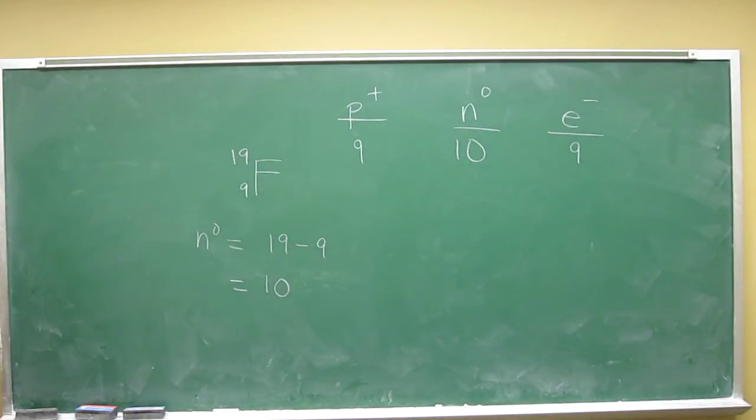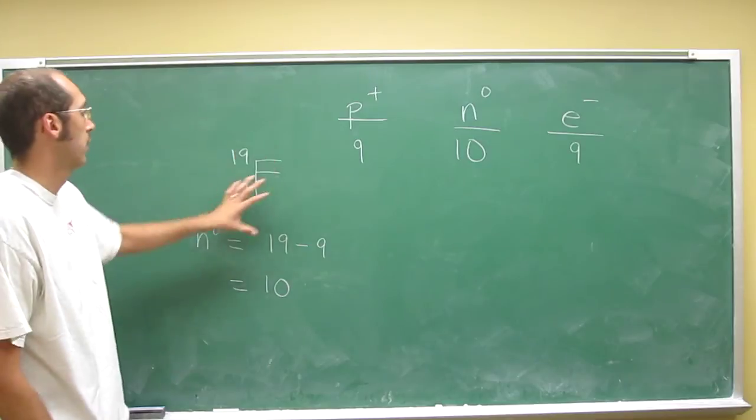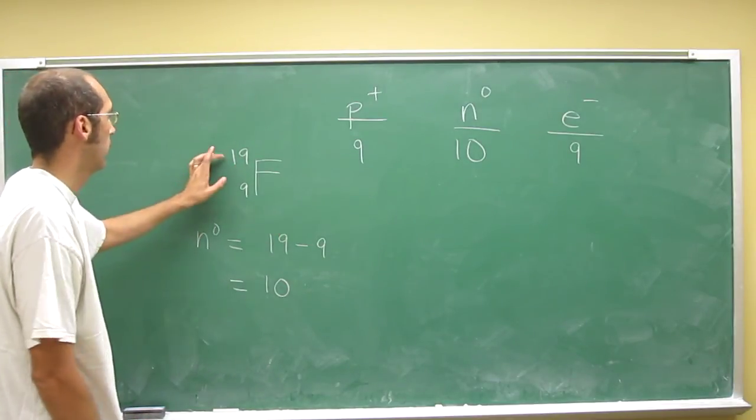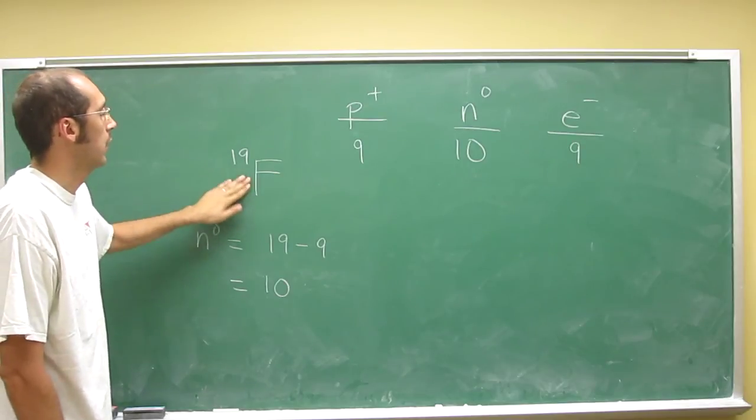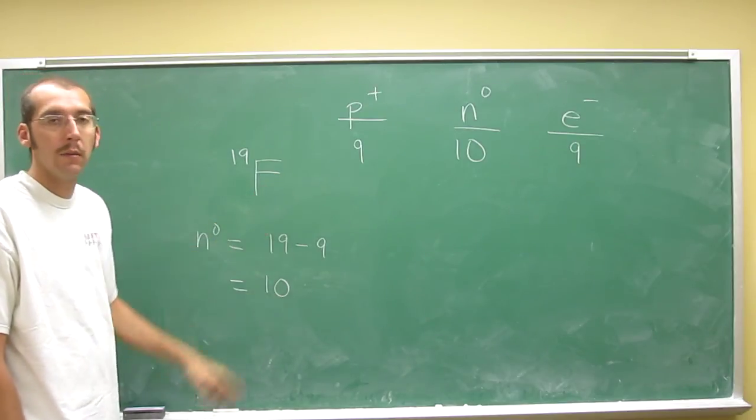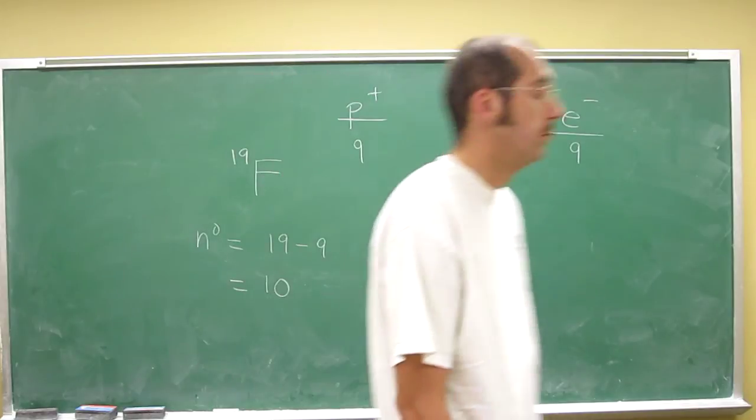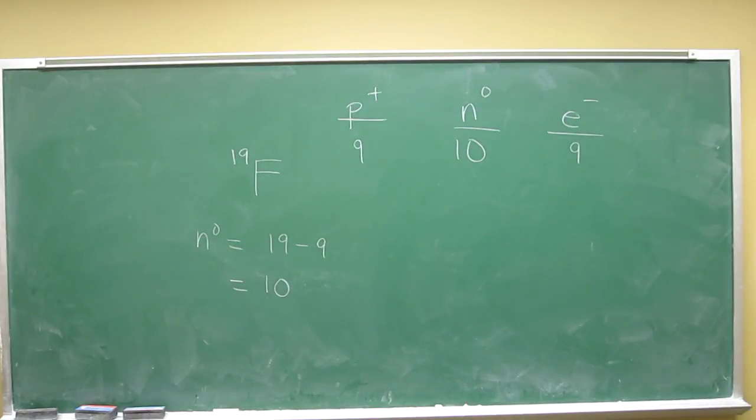So if something says to you fluorine 19, you're to remember the elemental symbol for fluorine 19. So mass number up here, atomic number down there. You don't even really need that because it's implied by the elemental symbol. Cool.